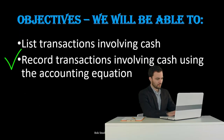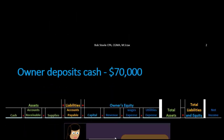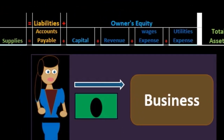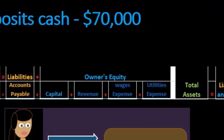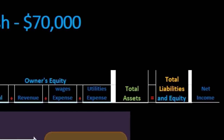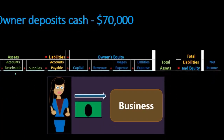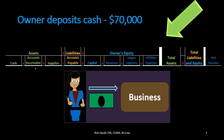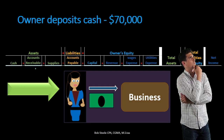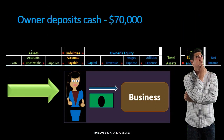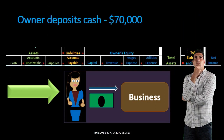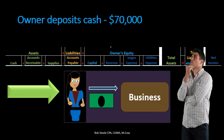Objectives: at the end of this we will be able to list transactions involving cash and record transactions involving cash using the accounting equation. We're going to list through these transactions and record them using the accounting equation, learning these transactions using our normal rules and thought process.